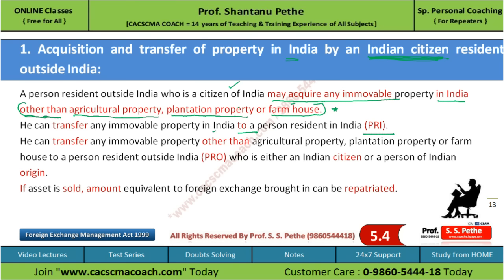He can also transfer any immovable property other than agriculture property, plantation property, and farmhouse to a PRO who is either a citizen of India or a person of Indian origin. The regulations also state that if such asset is sold by this PRO, then the amount received can be repatriated.